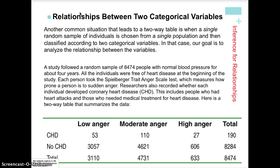Now we look at the other type of chi-square test: the test of independence, or the test of association. We want to determine whether the two variables — the column variable and the row variable — are independent of one another or associated. A common situation leading to a two-way table is when a single random sample of individuals is chosen from a single population and classified according to two categorical variables. The goal is to analyze the relationship between those variables, not different treatments.